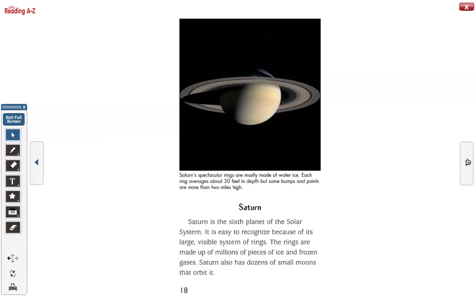Saturn's spectacular rings are mostly made of water ice. Each ring averages about 30 feet in depth, but some bumps and points are more than two miles high. Saturn.